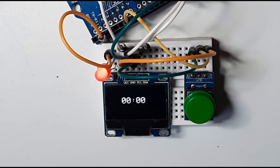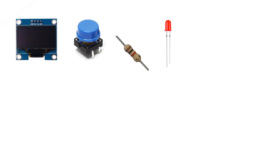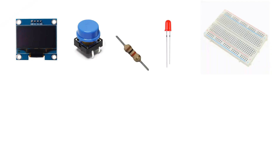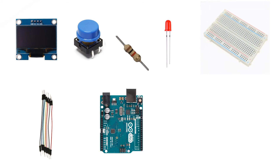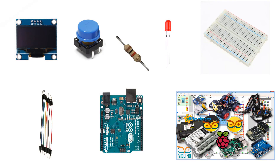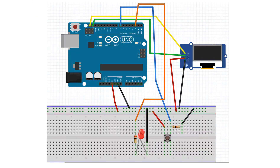For this project you will need an OLED display, one button, two 1k ohm resistors, one LED, a red board, some jumper wires, an Arduino board, and the Vizuino program.